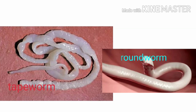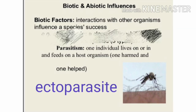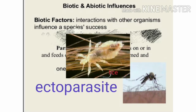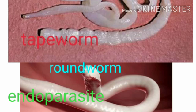The organism that benefits — such as the tapeworm or roundworm — is called a parasite, and the organism that is harmed is called a host, for example, human beings. There may be ectoparasites, which exist outside the body like mosquitoes, ticks, and lice, and endoparasites like tapeworms.